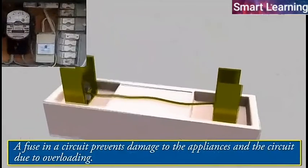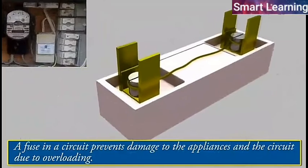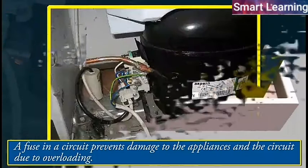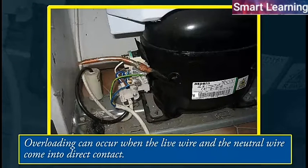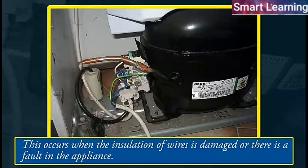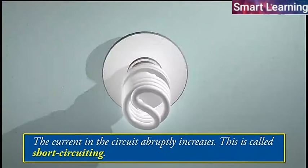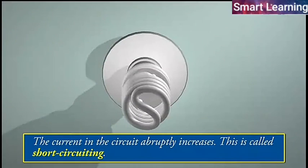A fuse in a circuit prevents damage to the appliances and the circuit due to overloading. Overloading can occur when the live wire and the neutral wire come into direct contact. This occurs when the insulation of wires is damaged or there is a fault in the appliance. In such a situation, the current in the circuit abruptly increases. This is called short circuiting.